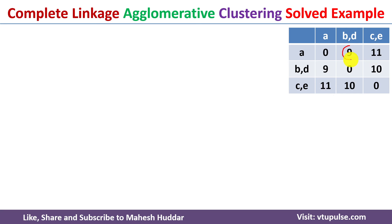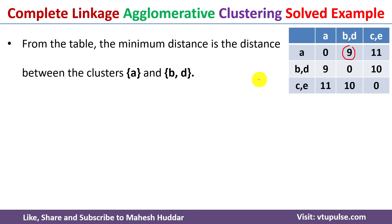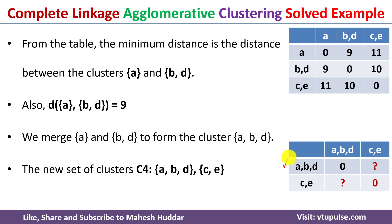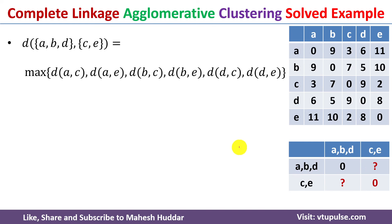This updated matrix becomes the base for the next iteration. Again we identify the minimum distance between the two clusters. The value 9 is the minimum, between clusters A and BD. So we need to merge A and BD. Once merged, we get only two clusters: ABD as one cluster and CE as the other. Again we do not know the distance between ABD and CE, so we need to use the max formula.